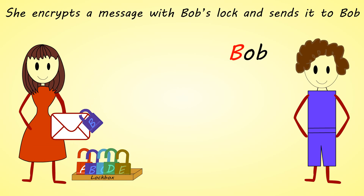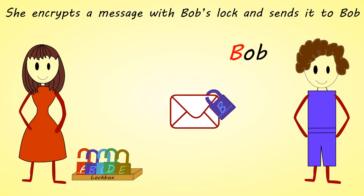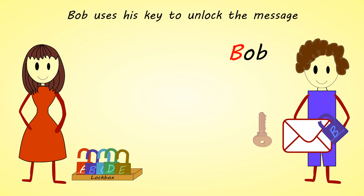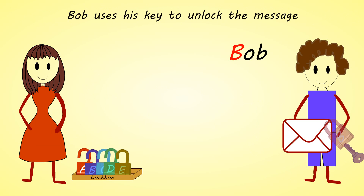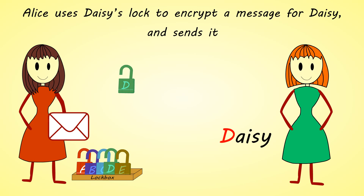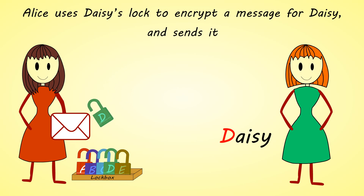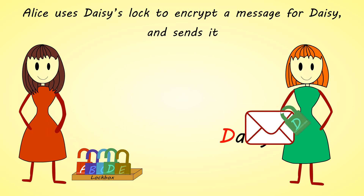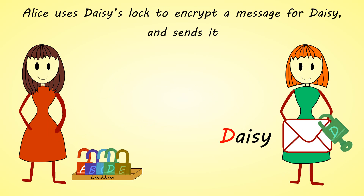She encrypts a message with Bob's lock and sends it to Bob. Bob uses his key to unlock the message. Alice uses Daisy's lock to encrypt a message for Daisy and sends it.